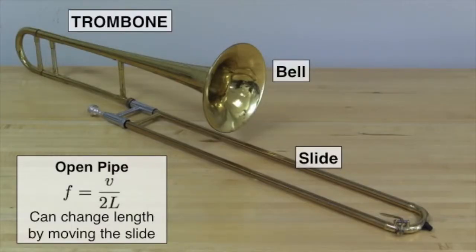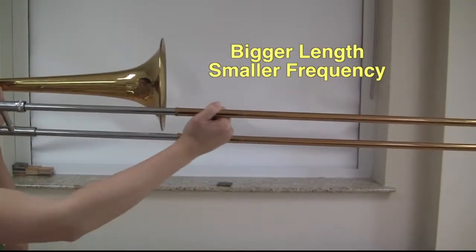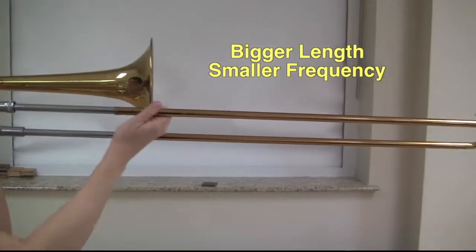Brass instruments like the trombone function as open pipes. By changing the length of the pipe, we can change the fundamental frequency. In the case of the trombone, this is done by moving the slide out. A bigger length makes a smaller or lower frequency.